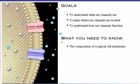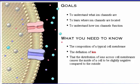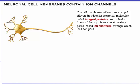Here's what you need to know: the composition of a typical cell membrane, the definition of ion, and that the distribution of ions across the cell membrane causes the inside of a cell to be slightly negative compared to the outside. Recall that the cell membrane is a lipid bilayer in which large protein molecules, called integral proteins, are embedded. Some of the integral proteins contain watery pores called ion channels through which charged particles, or ions, can pass.